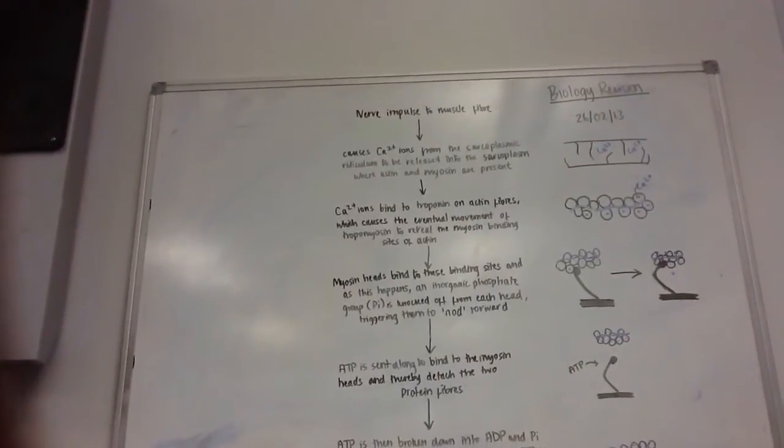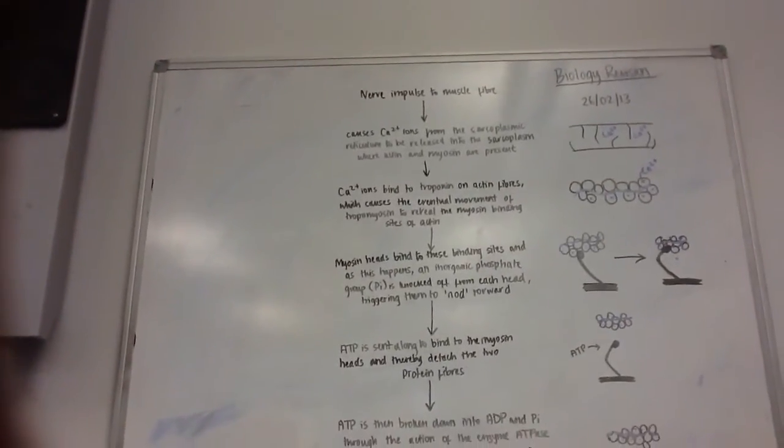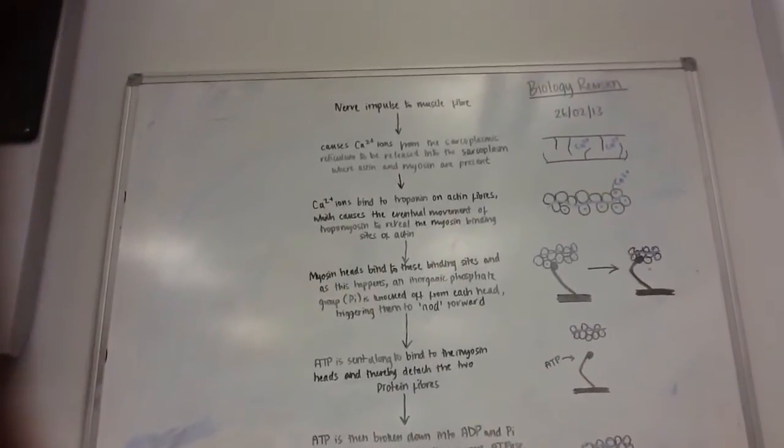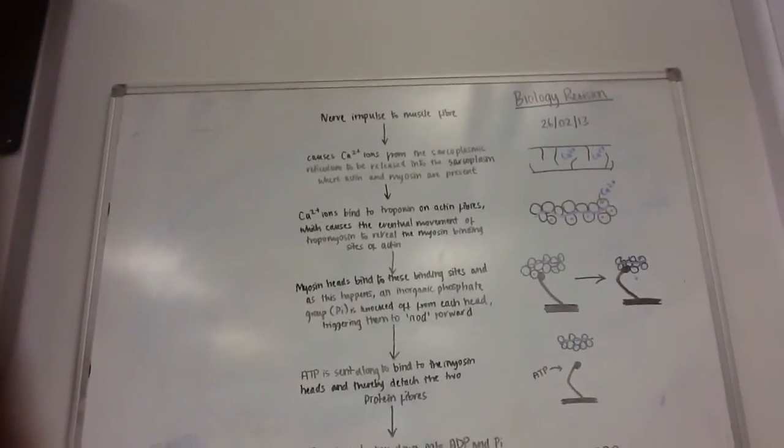So first, the nerve impulse arrives at the muscle fibre, where calcium ions are released into the sarcoplasm, where actin and myosin are present.